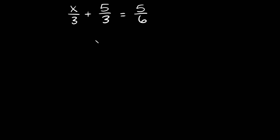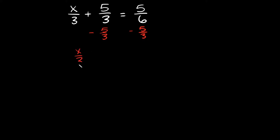We need to isolate x by itself on one side of this equal sign. In order to do that, the first thing I'm going to do is get rid of this 5 thirds, and I'm going to do that by simply subtracting 5 thirds. Remember, what you do to one side you have to do to the other, so if I subtract 5 thirds from here I have to do it over here also.